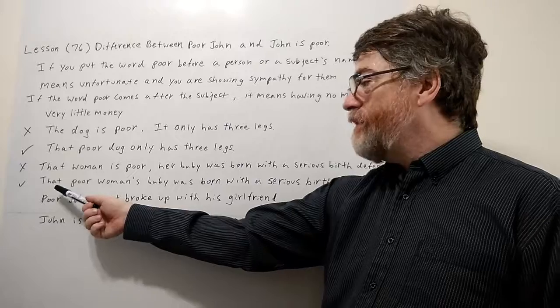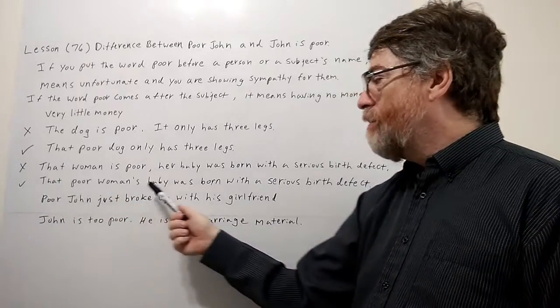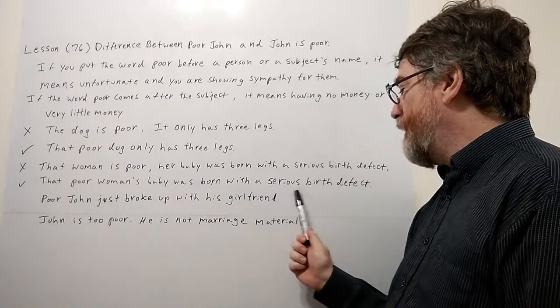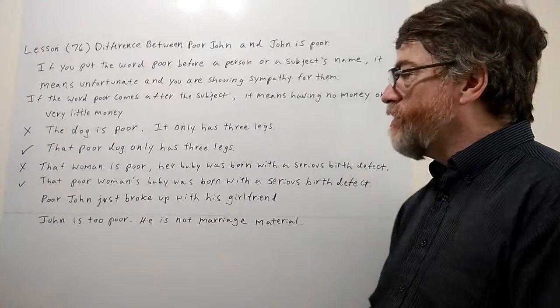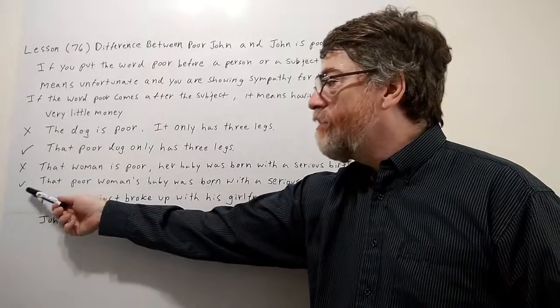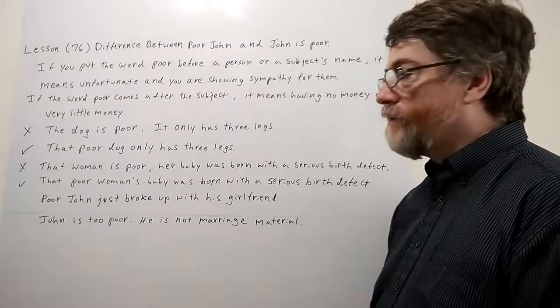The correct way would be: 'That poor woman's baby was born with a serious birth defect.' In the examples, an X means the sentence is wrong and a checkmark means it is correct.